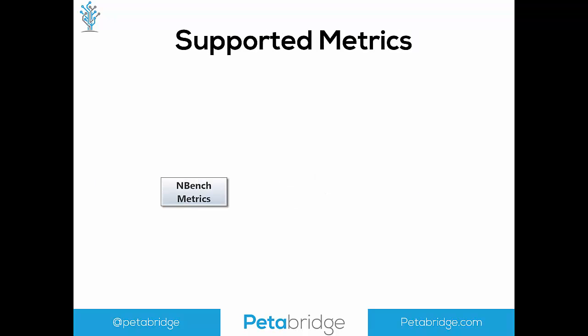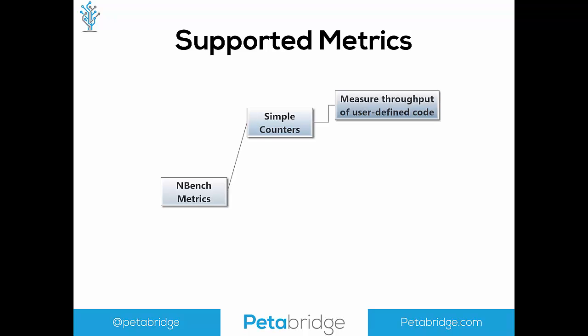In terms of supported metrics, nBench has simple counters — what we used in this example — for measuring throughput of user-defined code. You use a benchmark context to access a counter declared in a counter measurement attribute to measure operations per second in some part of your program. These simple counters are thread-safe, so you can use them in multi-threaded benchmarks.